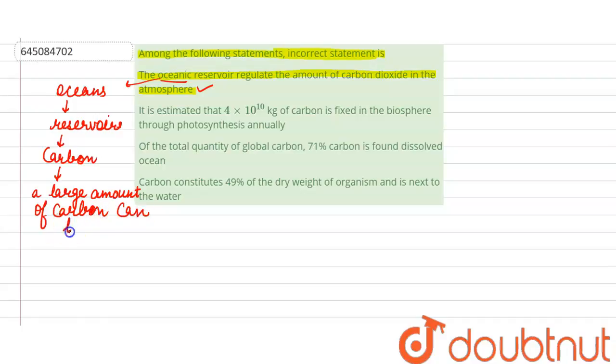So this statement is correct. Now the second statement is: it is estimated that 4 × 10^10 kg of carbon dioxide is fixed in the biosphere through photosynthesis annually.